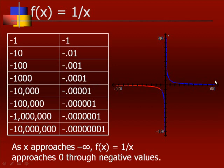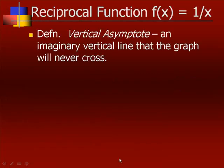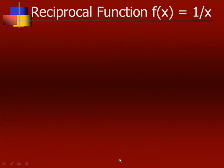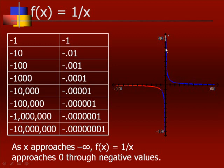One more piece of the graph. For x values -1, -10, -100, and so forth, as the x values approach negative infinity, the y values will get closer and closer to zero, although it's never going to touch. Your reciprocal function f of x equals 1 over x will have a vertical asymptote — an imaginary vertical line that the graph will never cross. Notice the graph never touches the y-axis, meaning we have a vertical asymptote of x equals zero.